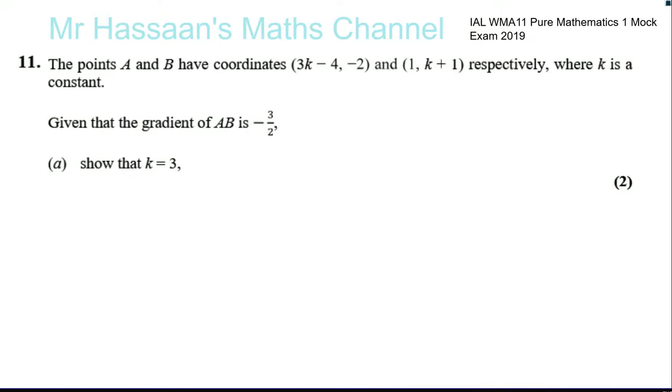Okay, now for question 11 from the mock paper for the Pure 1 International A Level, the mock exam from 2019 I gave my students. Question 11: the points A and B have coordinates (3k - 4, -2) and (1, k + 1) respectively, where k is a constant. Given that the gradient of AB is -3/2, show that k equals 3. So basically you have points A and B, where A and B are points as follows in terms of k.